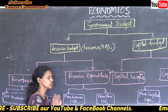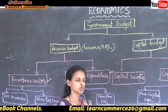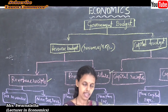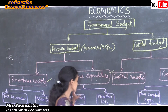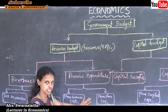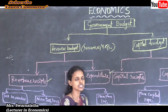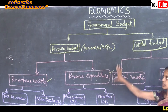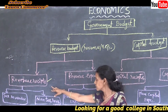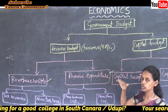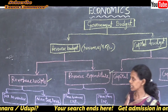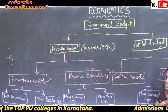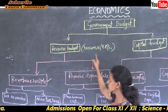Planned expenditure means the government makes plans and utilizes resources accordingly. Non-planned expenditure means during emergencies the government makes expenditure without any plans. So revenue budget consists of two kinds: one is revenue receipts — received through tax revenue and non-tax revenue — and the other is revenue expenditure, which includes planned and non-planned expenditure.